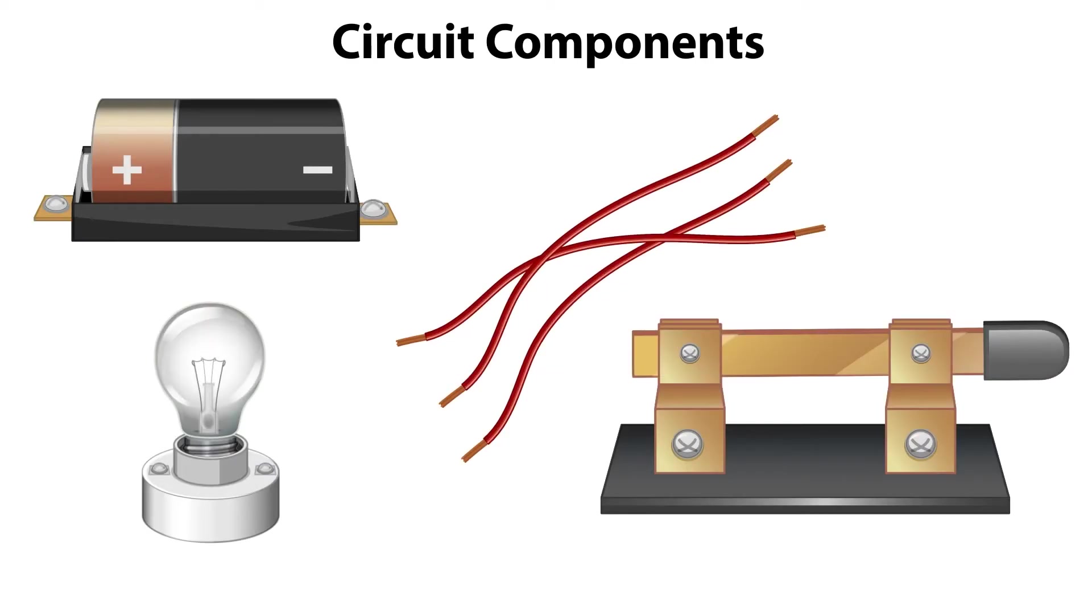A simple circuit is made up of different components. Batteries provide a source of electrical energy. Wires are electrical conductors. They're used to connect the circuit components.